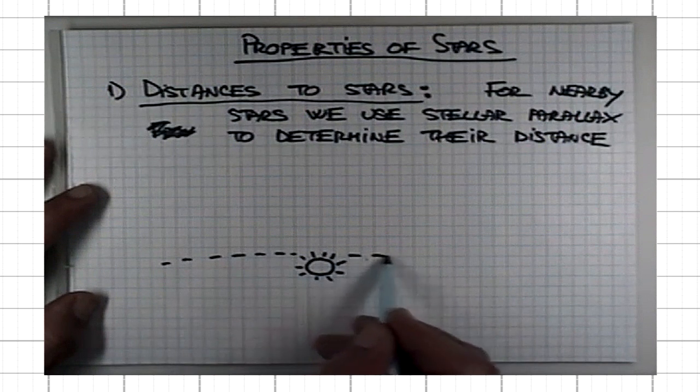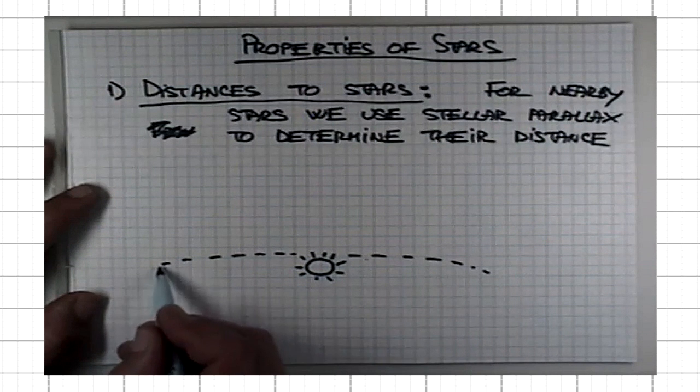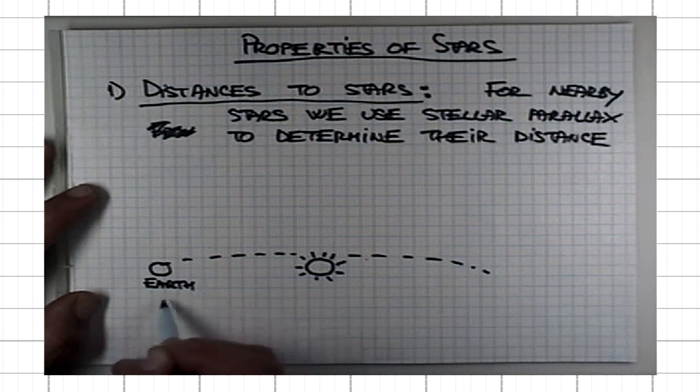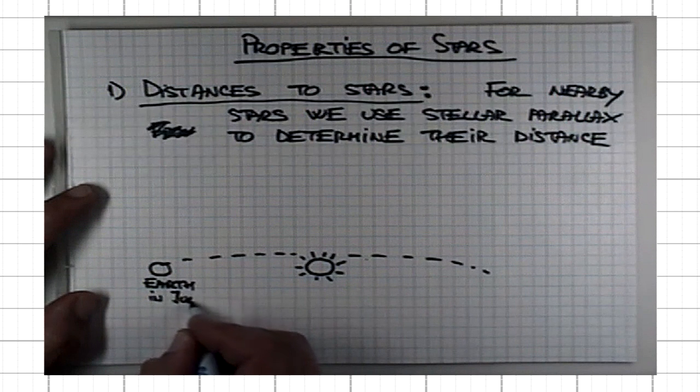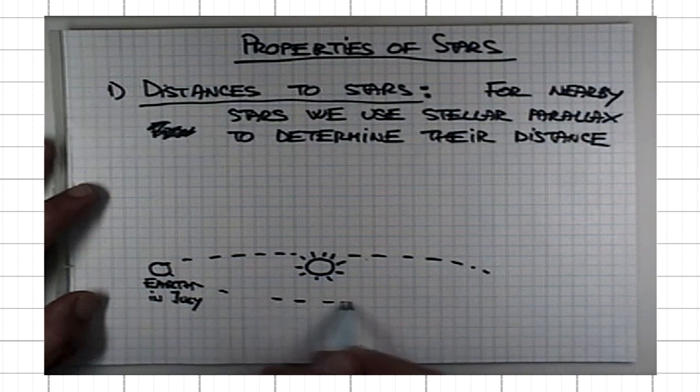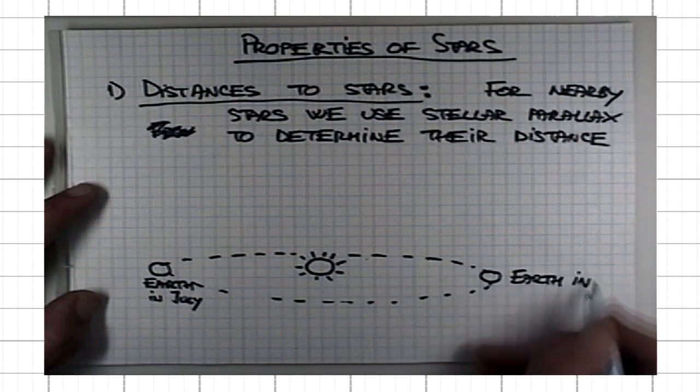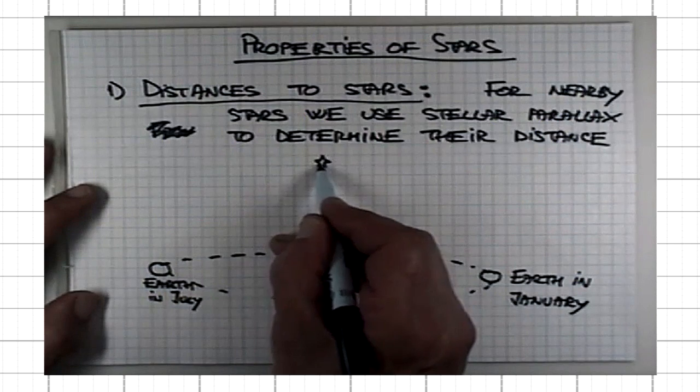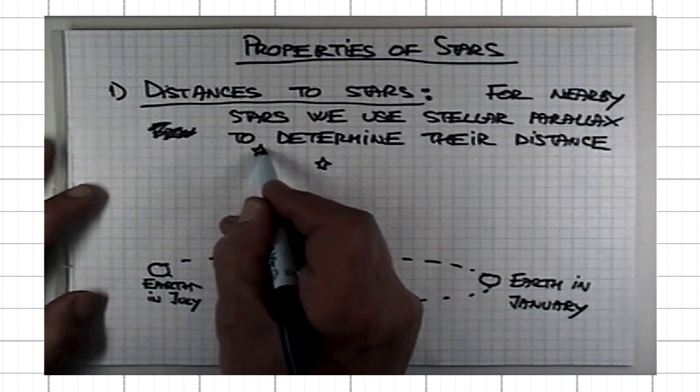Eventually, people were able to measure it for the first time in 1838. What it is is that, say, Earth in June or July, it doesn't matter, and here is the Earth six months later.